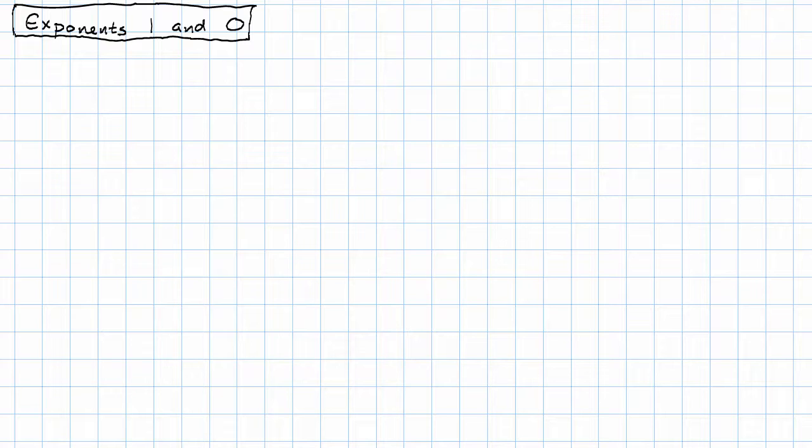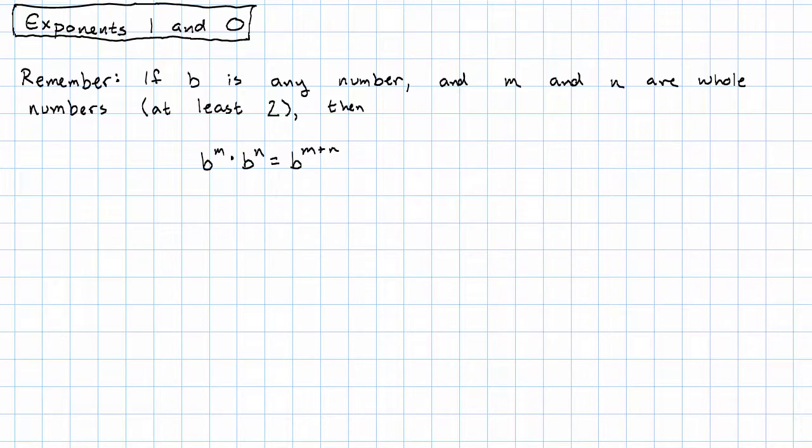But now that we have that exponent rule for multiplication in hand, remember that said if b is any number and m and n are whole numbers, at least 2, then b to the m times b to the n equals b to the m plus n.